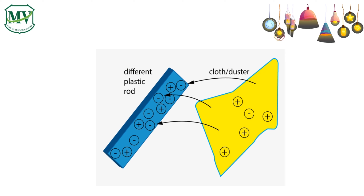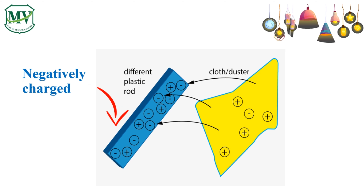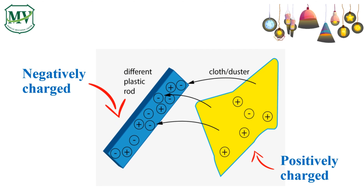Another example: the plastic rod and woolen cloth. Both are neutral, meaning they have equal numbers of protons and electrons. Now, if we rub the woolen cloth onto the plastic rod, the electrons from the woolen cloth move into the plastic rod, making it negatively charged. And what is the charge of the woolen cloth? It becomes positively charged because it has more protons.